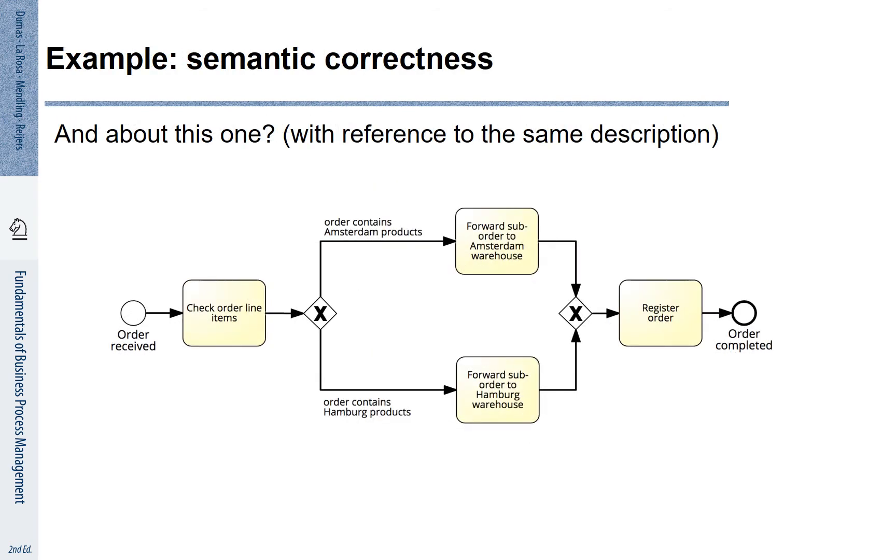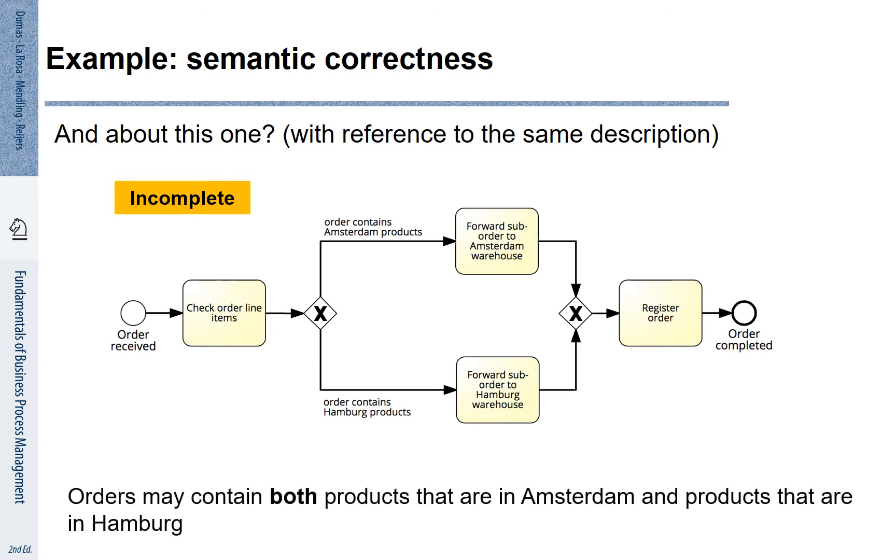What about this model? Here we see that there is an XOR split. We have to choose to either produce sub-orders for Amsterdam or for Hamburg. This model is not complete. Apparently we cannot represent the fact that it is also possible to have orders for Amsterdam and for Hamburg. This means this model is also semantically not correct but for a different reason. It may be the case that we have sub-orders produced for both of these warehouses.